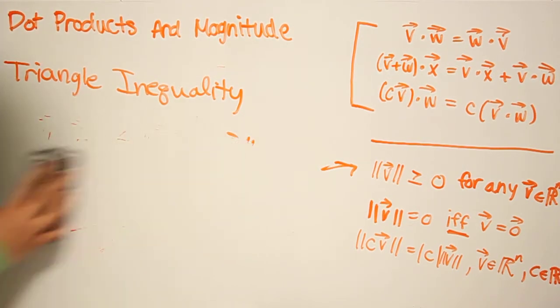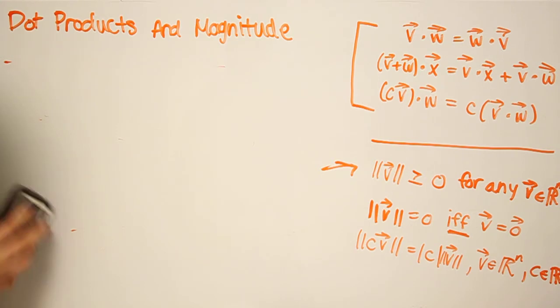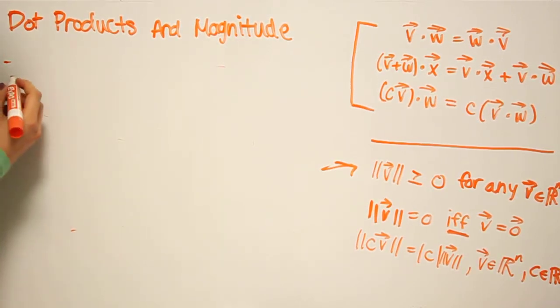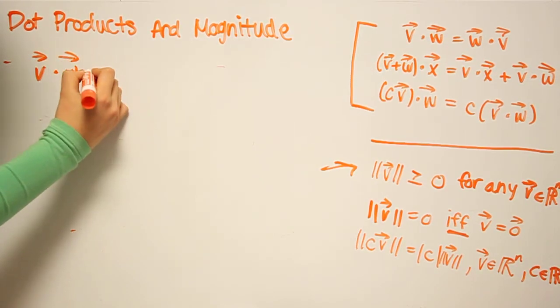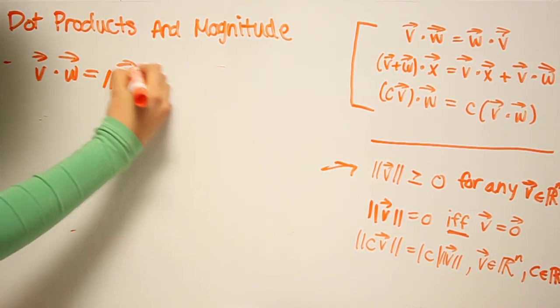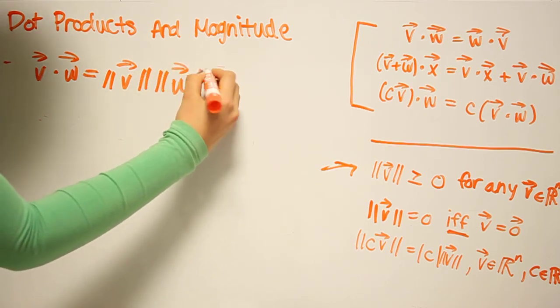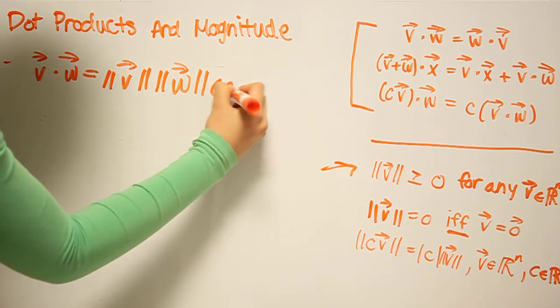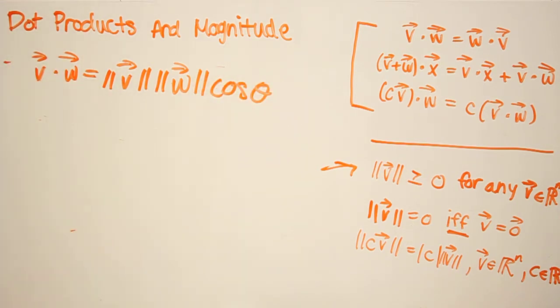Okay. Next proposition, you can derive actually from the law of cosines. I'm just going to write it here. So the dot product of V and W is equal to the product of the magnitudes of the vectors times cosine theta,